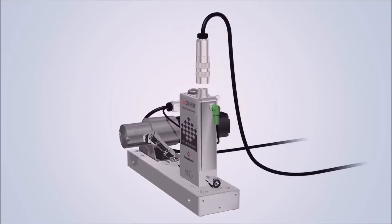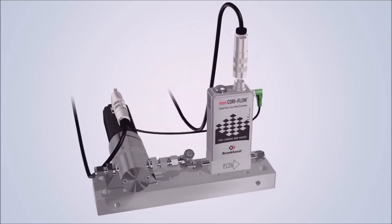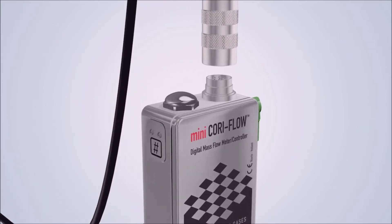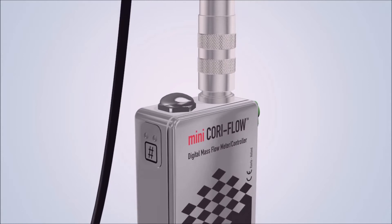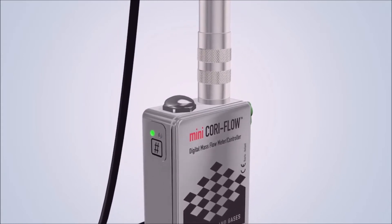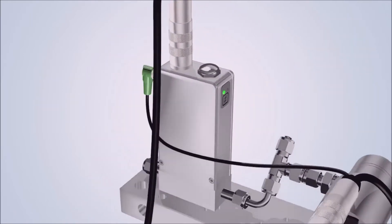A Bronkhorst Mini CoriFlow instrument requires a voltage of between 15 and 24 volts. When the supply voltage is connected, the LEDs show the current status. The instrument is ready for use when the green LED lights up.